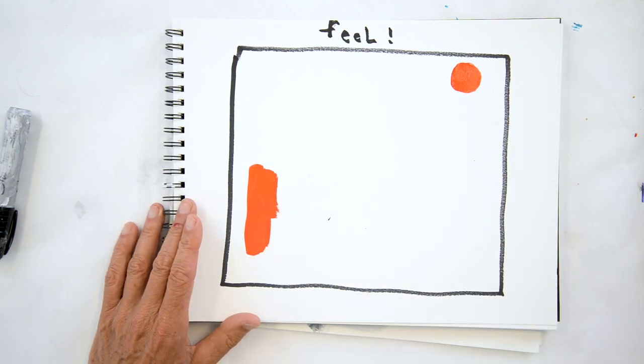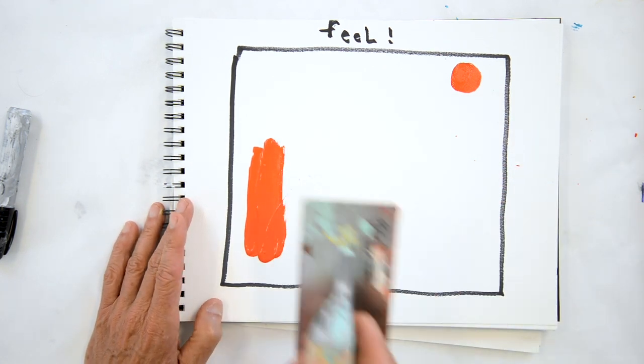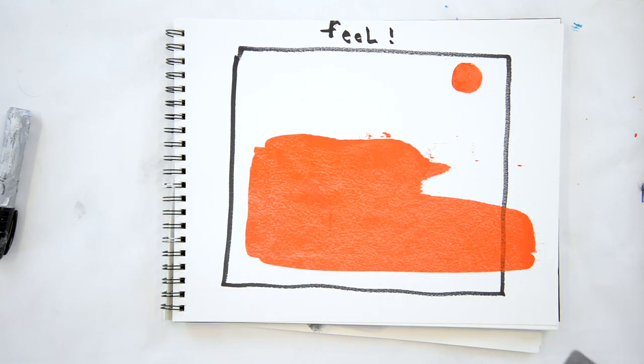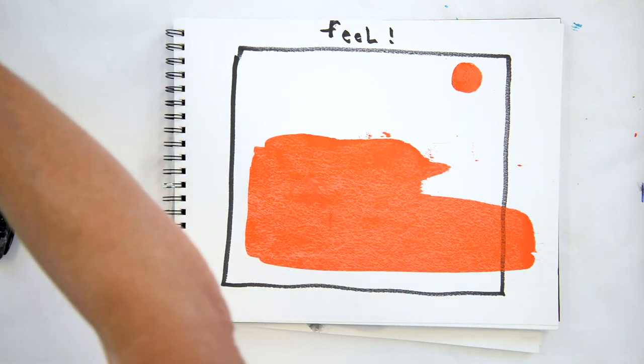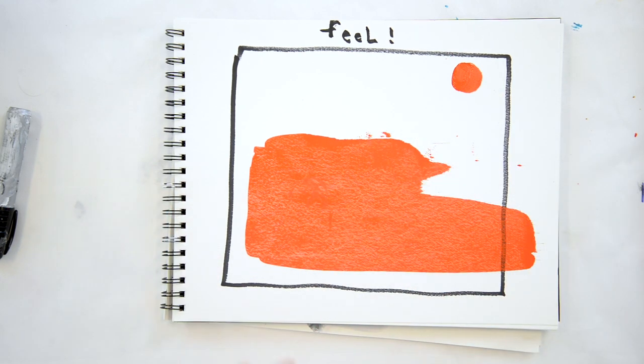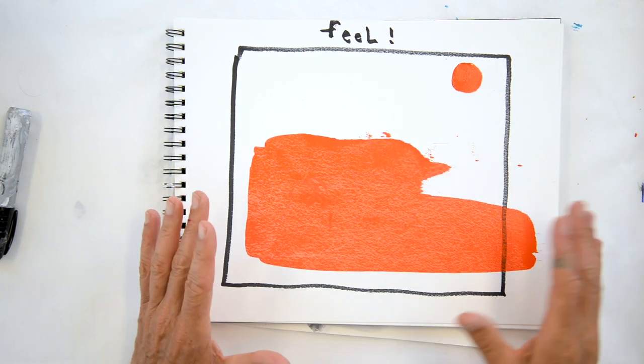So I might take this paint and put it on here and maybe get a bigger tool if I want it to just feel really free. Like that feels more spacious and free. And because that's the feeling I want to have happen, it satisfies me because that's more free-like.